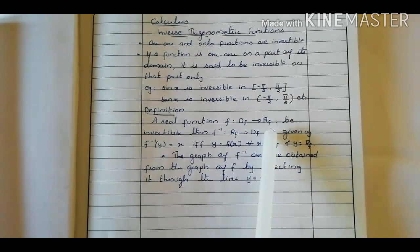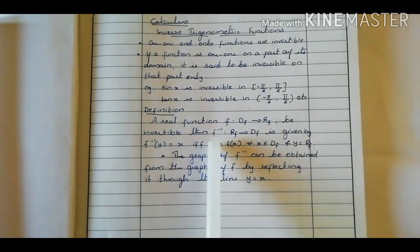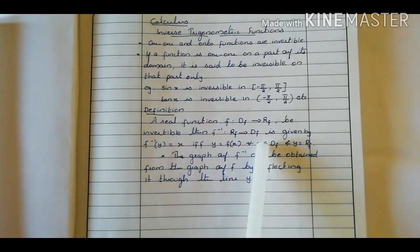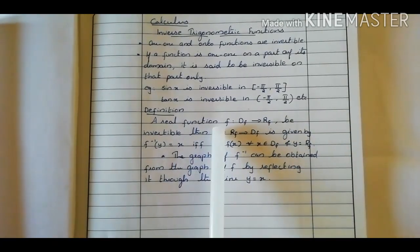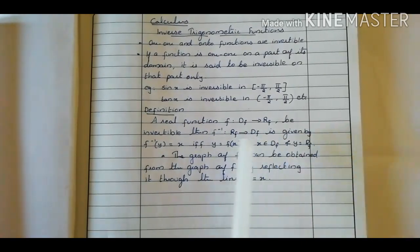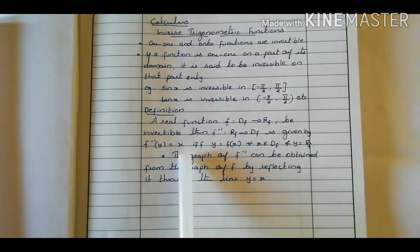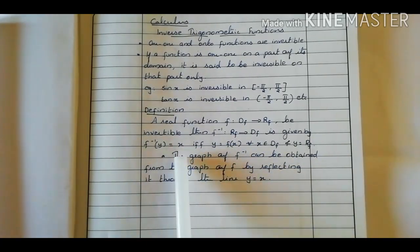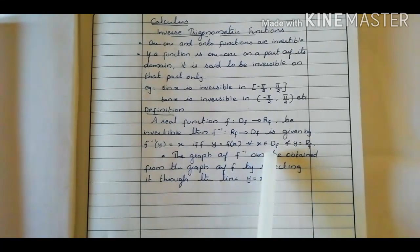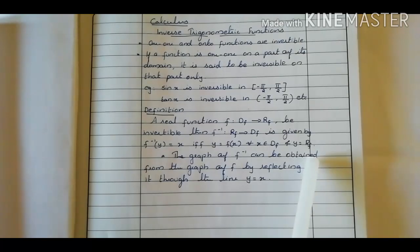A real function f from domain of f to range of f is invertible. Then f inverse goes from range of f to domain of f, and it is given by: f inverse of y equals x if and only if y equals f of x, for all x belonging to domain of f and y belonging to range of f.